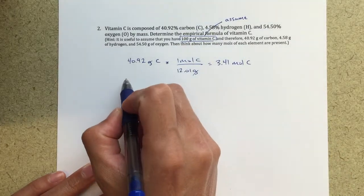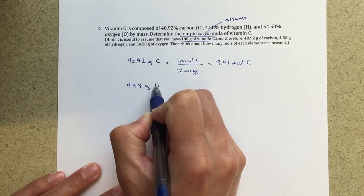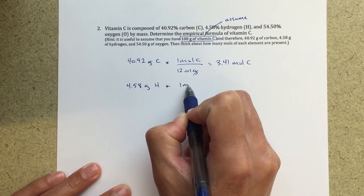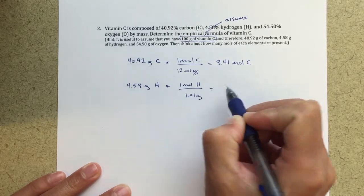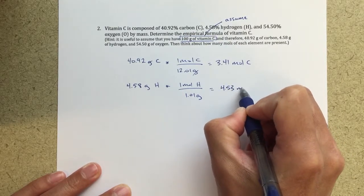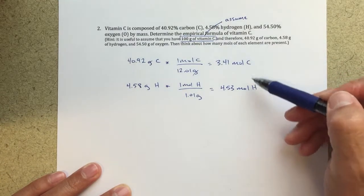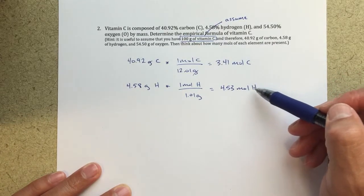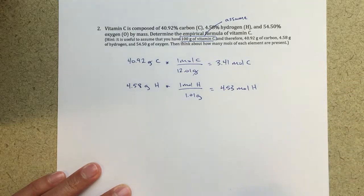I can do the same thing for hydrogen. 4.58 grams of hydrogen times one mole of hydrogen over 1.01 grams leaves me with 4.53 moles of hydrogen. The ratio of hydrogen to carbon—I can already see I'm going to have a little bit more hydrogen atoms for every one carbon atom, but we'll figure the rest out later.